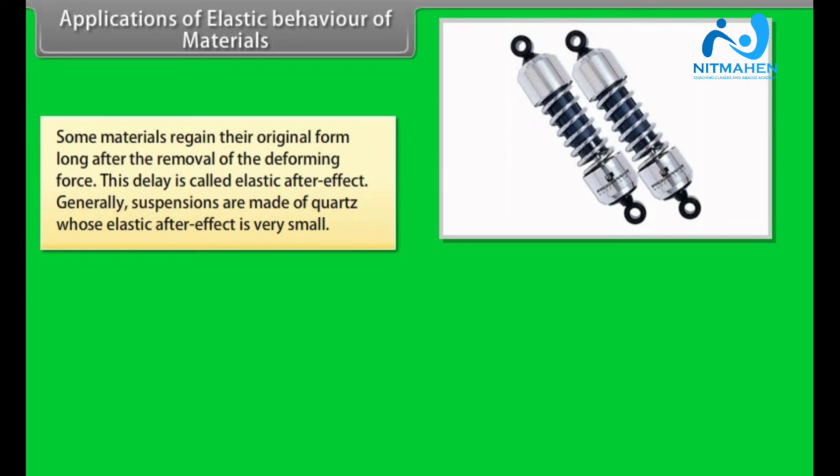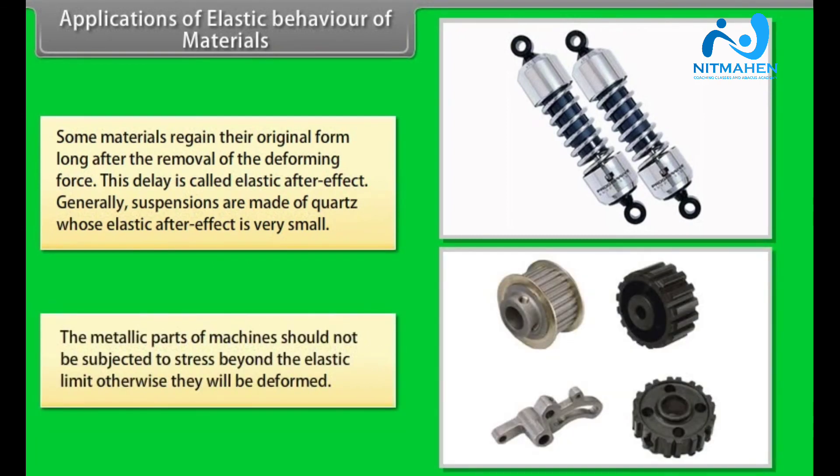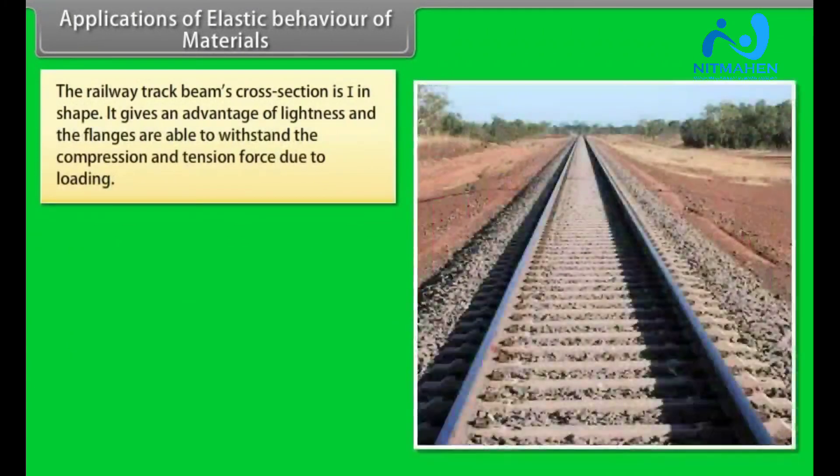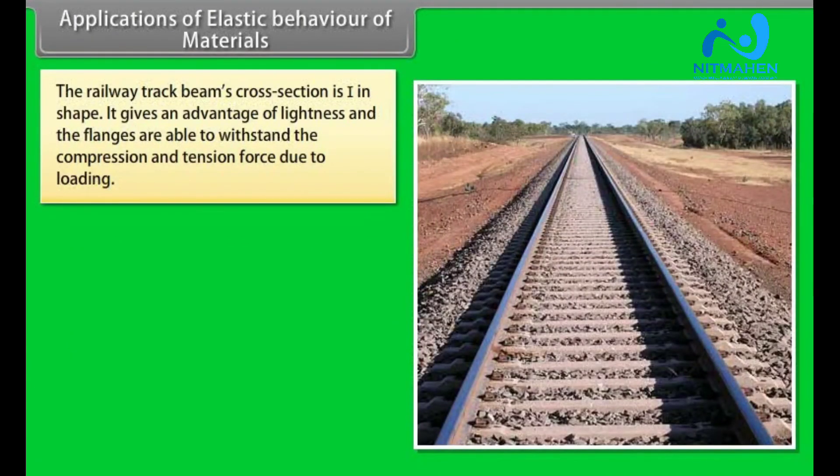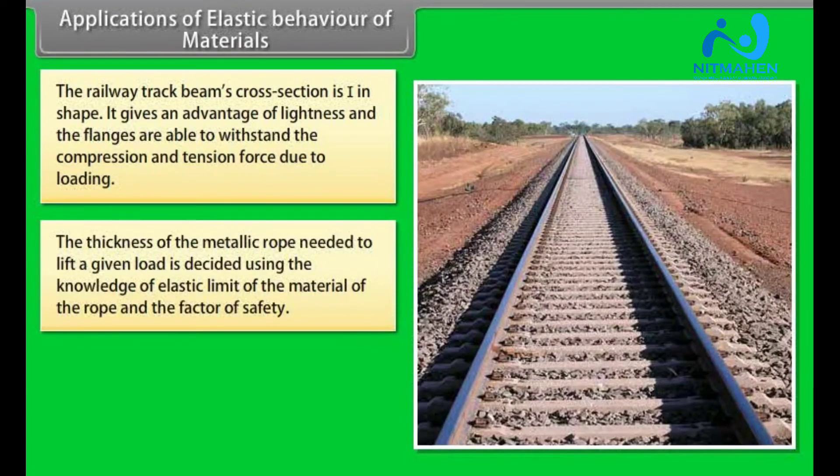Applications of elastic behavior of materials. Some materials regain their original form long after the removal of the deforming force. This delay is called elastic aftereffect. Generally, suspensions are made of quartz whose elastic aftereffect is very small. The metallic parts of machines should not be subjected to stress beyond the elastic limit, otherwise they will be deformed. The railway track beam's cross section is I in shape. It gives an advantage of lightness and the flanges are able to withstand the compression and tension force due to loading.